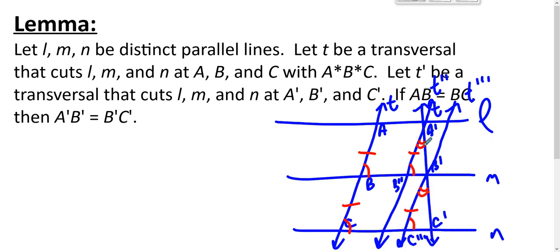Cut by a transversal. So those are definitely congruent. And now triangle A prime B prime B double prime is congruent to triangle B prime C prime C double prime by angle side angle. And that means A prime B prime equals B prime C prime.